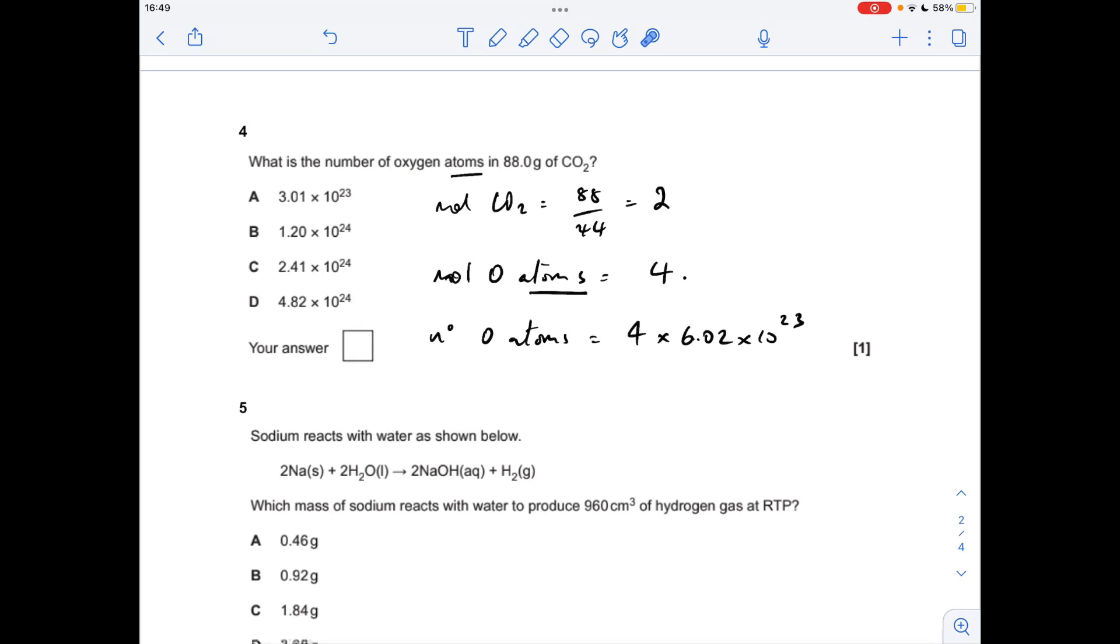Next one. The number of oxygen atoms in 88 grams of CO2. So the first thing we're doing is working out how many moles of carbon dioxide molecules we've got. The answer is 2, mass over MR.